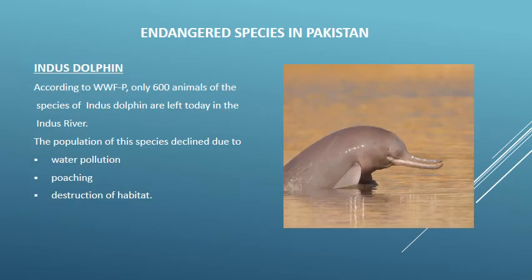Three endangered species are discussed: The first is the Indus Dolphin. According to WWF, only 600 animals of the Indus Dolphin species are left today in the Indus River. It is also known as the Blind Indus Dolphin and is found in the tributaries of the Indus River — the Sutlej, Ravi, Chenab, and Jhelum. It lives in freshwater and lives for approximately 28 years. The population declined due to water pollution, poaching (illegal hunting or catching), and destruction of habitat caused by construction of barrages and irrigation channels.